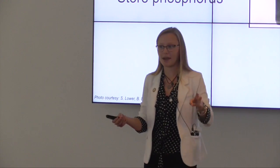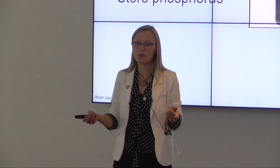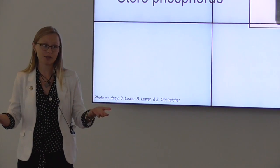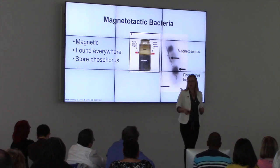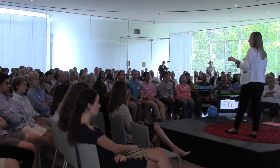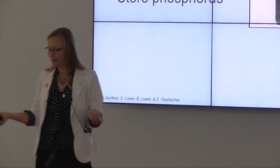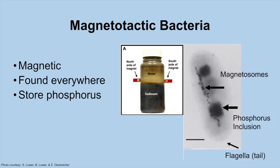There are three important components to this bacteria that has the potential to really clean up a drinking water supply. First, they are magnetic — just like the name suggests, you can move them with a magnet. They have a north and a south end, just like any magnet, and you can move them very easily in any water ecosystem. Secondly, they are found everywhere — in the Maumee River, Lake Erie, any other place around the world. Likely in any ecosystem that has water, you'll find them. Thirdly, they have the ability to store phosphorus — they're like a sponge that can absorb it from the water.